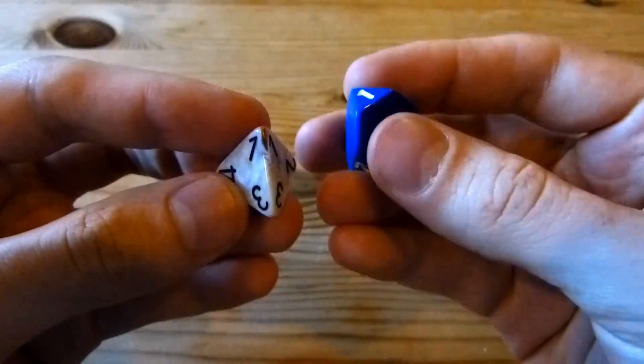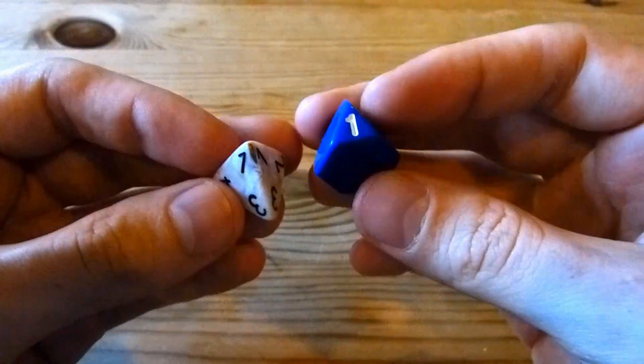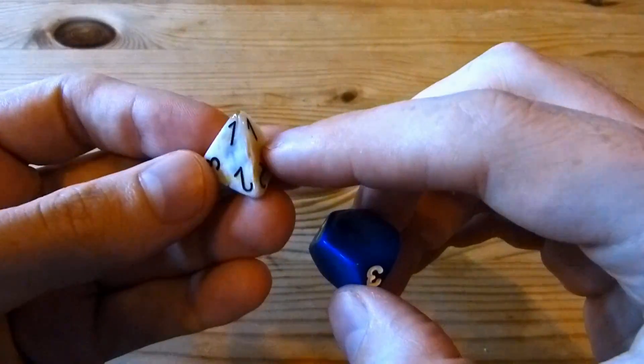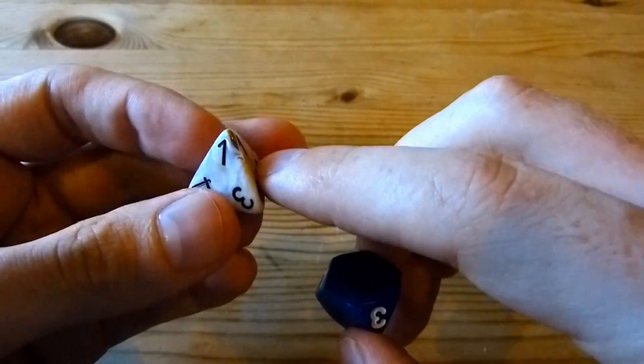There's a few advantages of using a truncated tetrahedron instead. One, you can actually write the number on the top of the die rather than on the side. Sometimes you see it near the base of the tetrahedron.